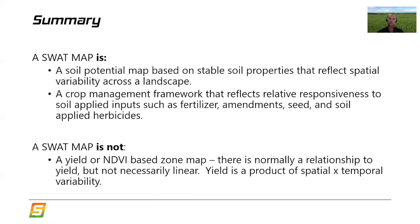What a SWAT map is not is a yield or NDVI-based zone map — those are what we've gotten really used to in the industry, but they don't really determine nutrient responsiveness. There is normally a relationship to yield, but it's not always linear. Often the highest yielding part of the field might be in zone six, seven, or eight depending on the field. Yield is a product of both spatial and temporal variability — in a really wet year, zones eight to ten might be totally flooded out and zone one might yield fairly well. In a dry year, zone one might be really poor and zones eight, nine, and ten might do the best.